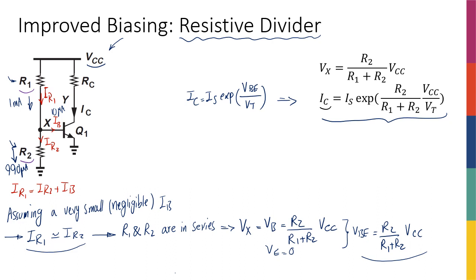and then I said Ic is beta times that, that's why my collector current was related to beta, or was dependent on the beta and had a direct relationship with beta. However, here,